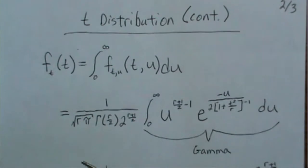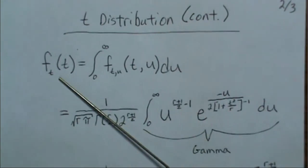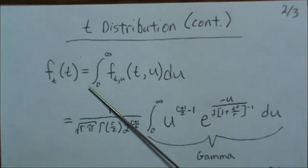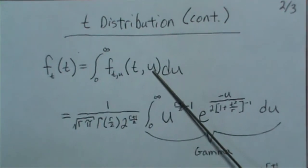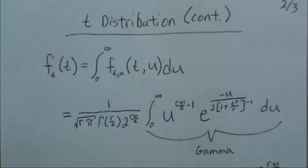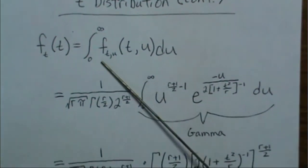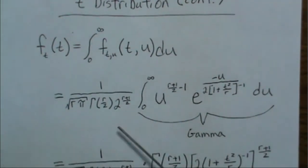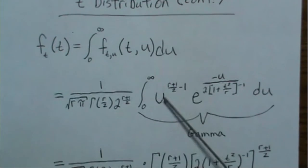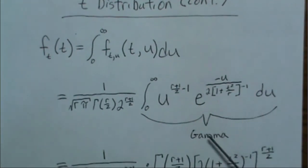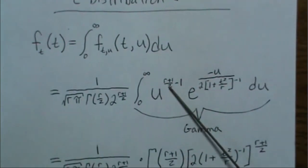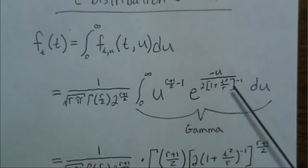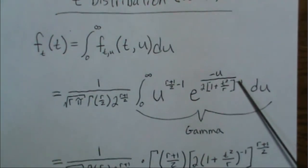So then, to get the marginal distribution of t, or the t distribution, we have to integrate out u. So we do that. We take this joint density, move out all the constants, so that's everything without a u. And this is what's left over.